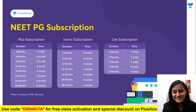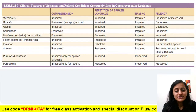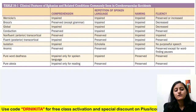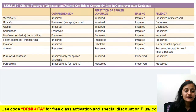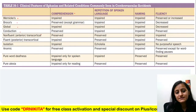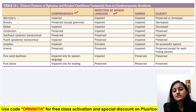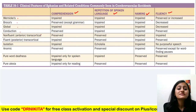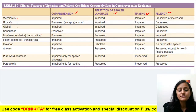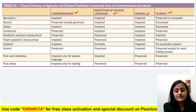Let's start with the topic of aphasia. This is the table we have to decode today — basically what is Wernicke's, Broca's, global, conduction, and transcortical aphasia; in which comprehension is affected, in which repetition is affected, in which naming is affected, and in which fluency is affected or preserved. That is what we need to decode.